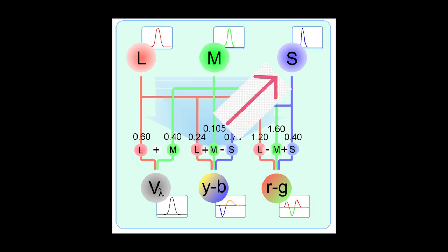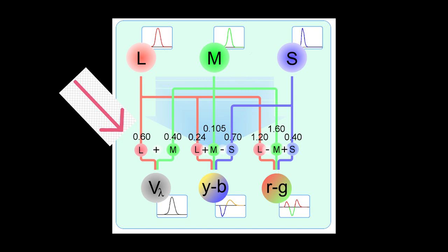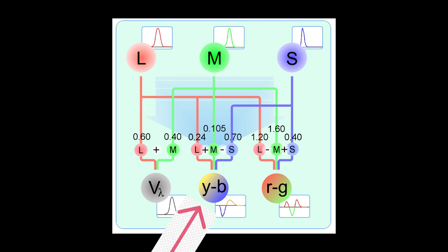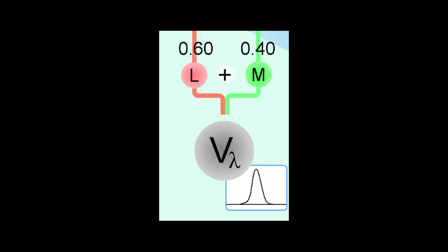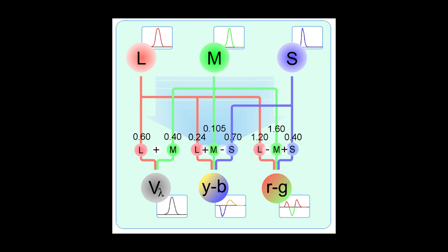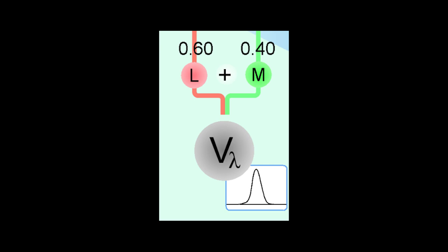The output of the L, M, and S cones are linearly combined into their color opponents. The outputted combinations are how bright the color appears to us, yellow minus blue, and red minus green. This second stage is important because it informs us how much a cone affects a given output. As you can see, the L and M cones are exclusively responsible for how bright a color appears, with the L cone making up 60% of that perceived brightness.